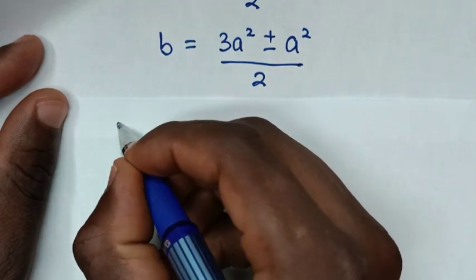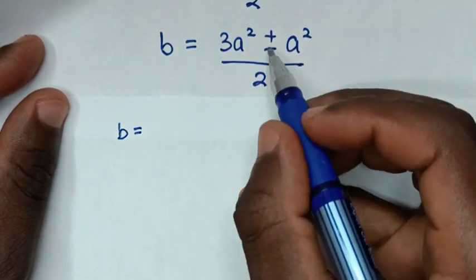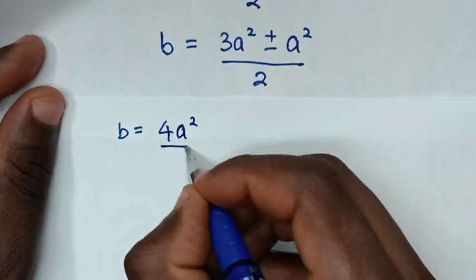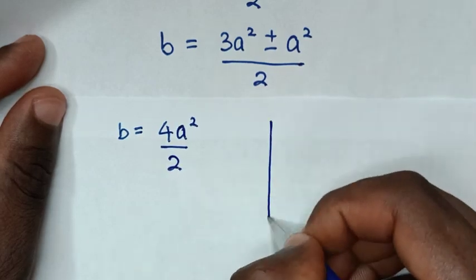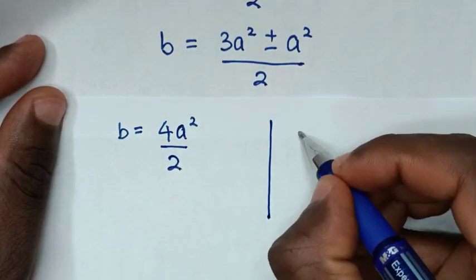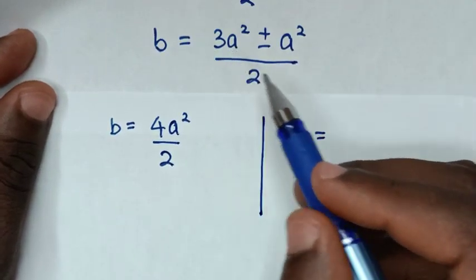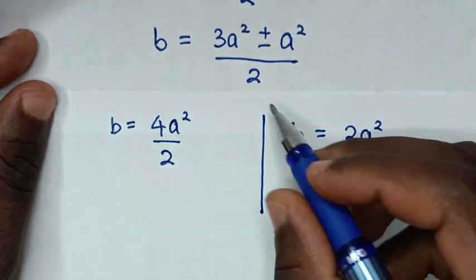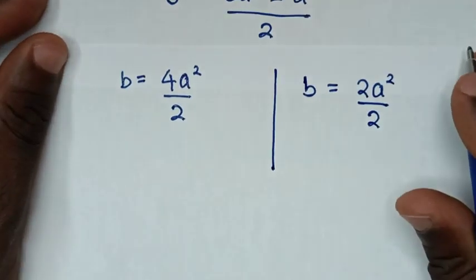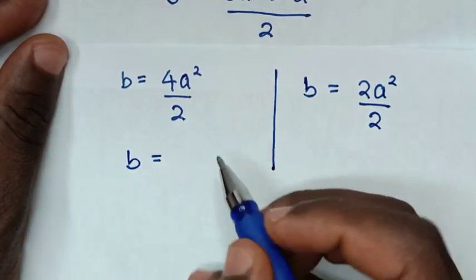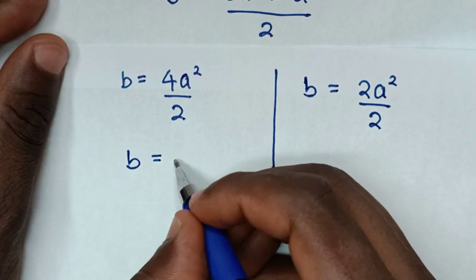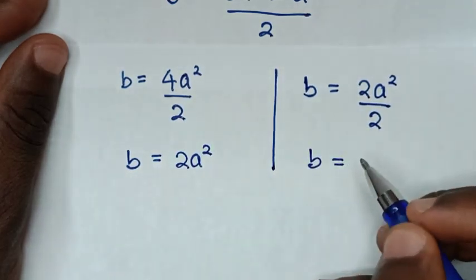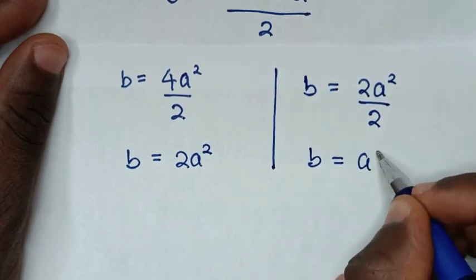From the plus or minus we get two solutions. The first solution with the plus sign: b equals (3a² + a²) over 2, which is 4a²/2 = 2a². The second solution with the minus sign: b equals (3a² − a²) over 2, which is 2a²/2 = a².